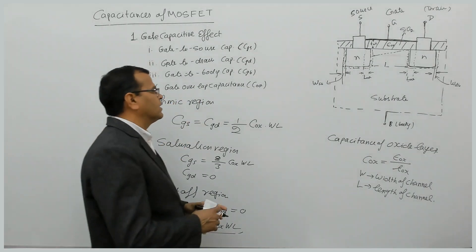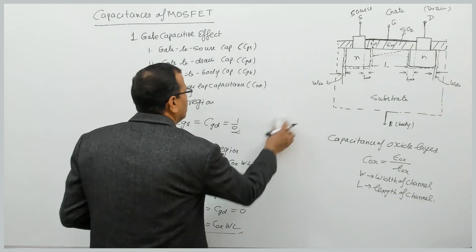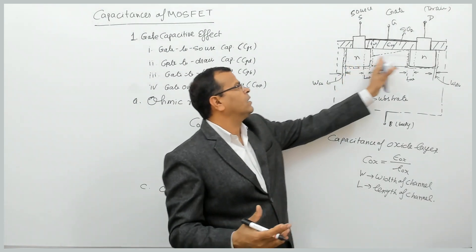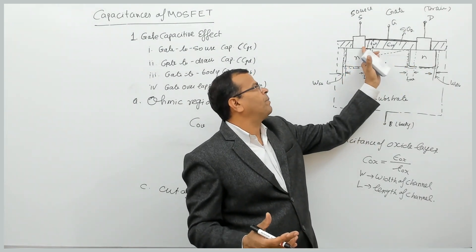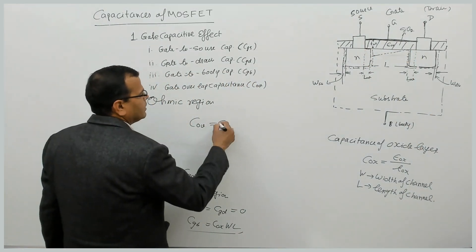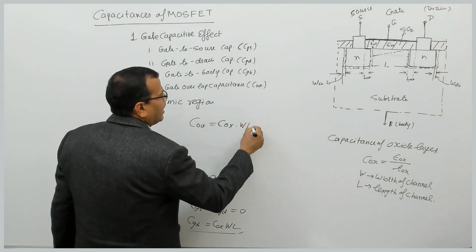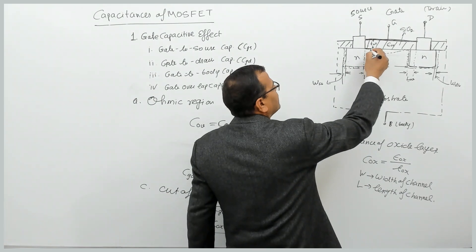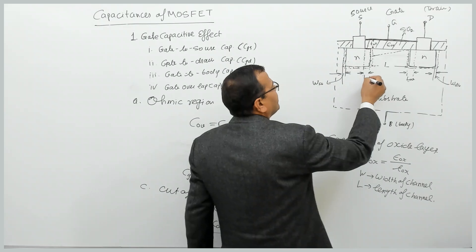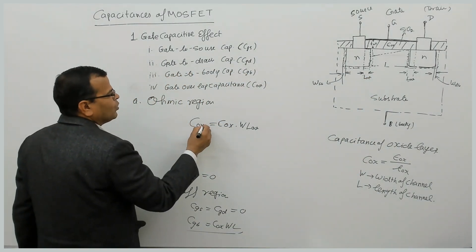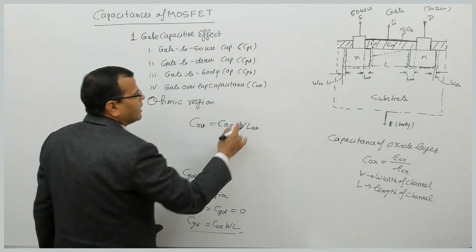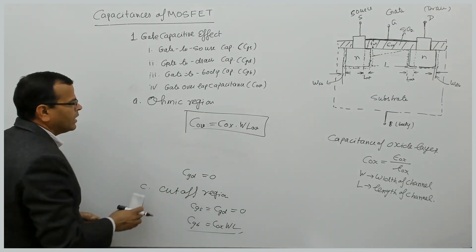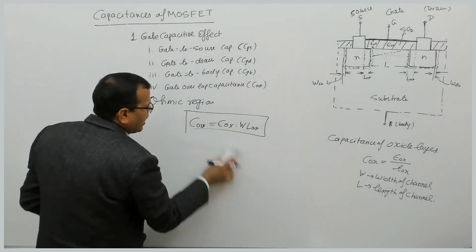Now let us talk about overlap capacitance. The overlap capacitance C_OV will be the same for source and drain, assuming the device is symmetrical. It is given by C_OV = C_ox · W · L_OV, where L_OV is the length of the overlap between the gate and source or drain region. This overlap capacitance should be added to both gate-to-source and gate-to-drain capacitances. These expressions are important and may appear in GATE examination questions.